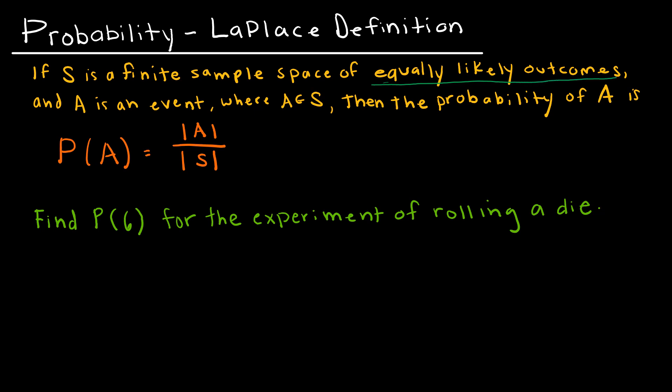Let's talk about a little bit of terminology. S is a finite sample space. Finite, of course, means that it's countable, it ends, it's not infinite. Sample space is all of the possible outcomes.